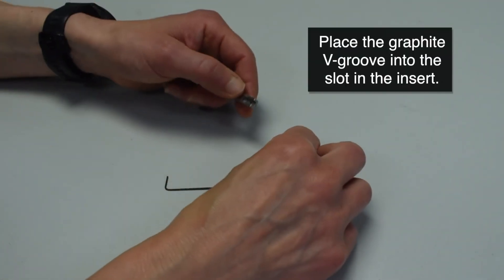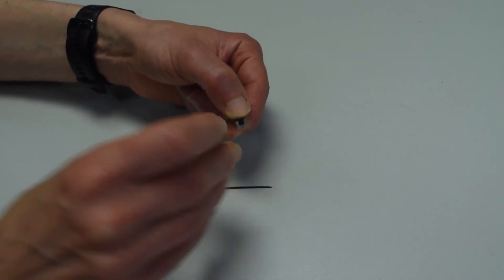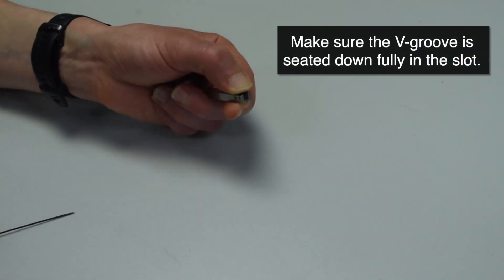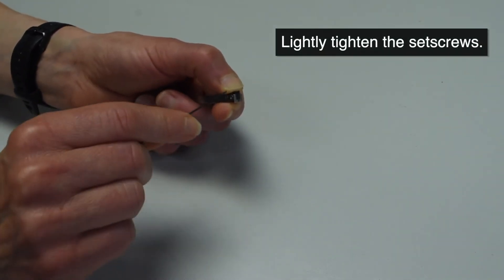Now, carefully place the graphite V-groove into the slot in the insert. Use a thumb to gently press down on the top of the graphite to ensure it is seated properly. Lightly tighten the screws to hold the graphite in place.